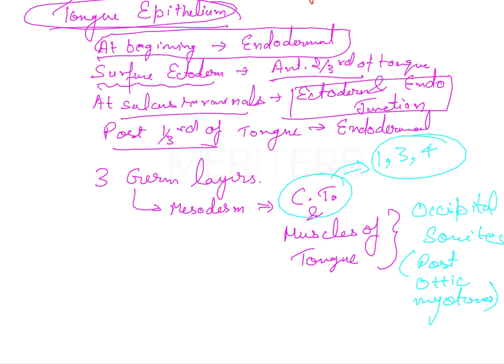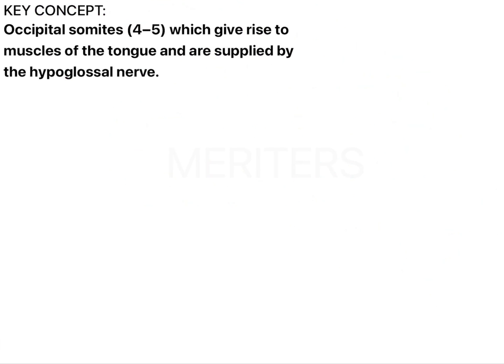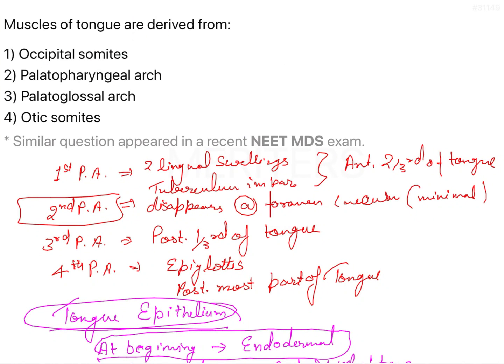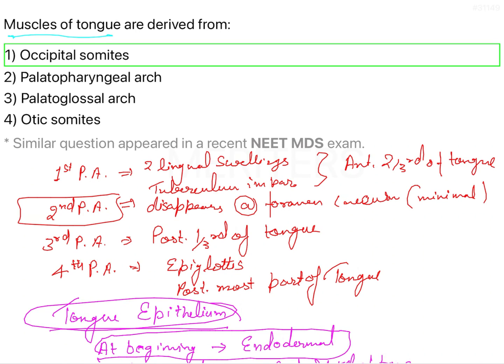Key concept: occipital somites four and five give rise to the muscles of the tongue and are supplied by the hypoglossal nerve. So the answer to the question — muscles of the tongue are derived from — is option one: occipital somites.